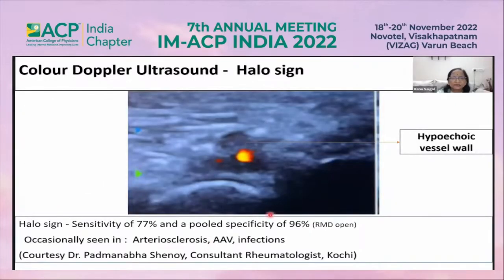Modern ultrasound machines now have a resolution of 0.1 mm and can detect small changes in wall thickness. This is the typical halo sign — specificity 96%. The lumen is visible, and there is a hypoechoic vessel wall due to inflammation; with steroids, this sign disappears in two to four weeks.